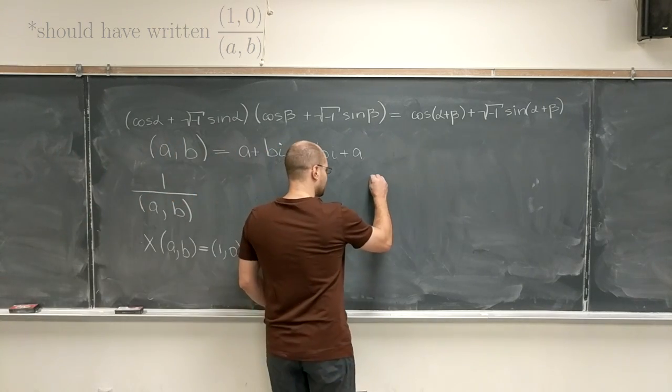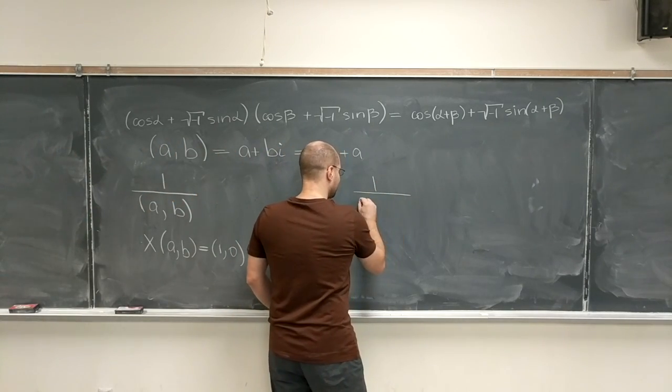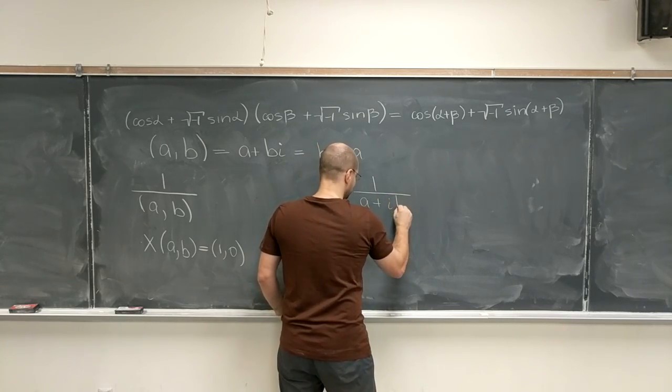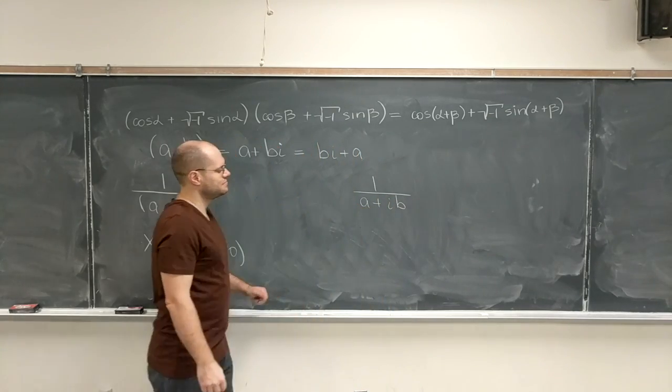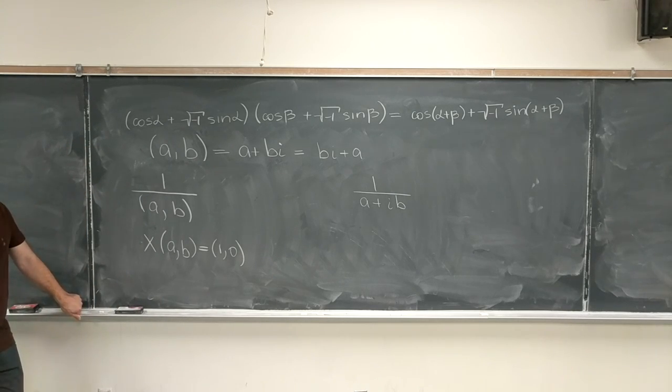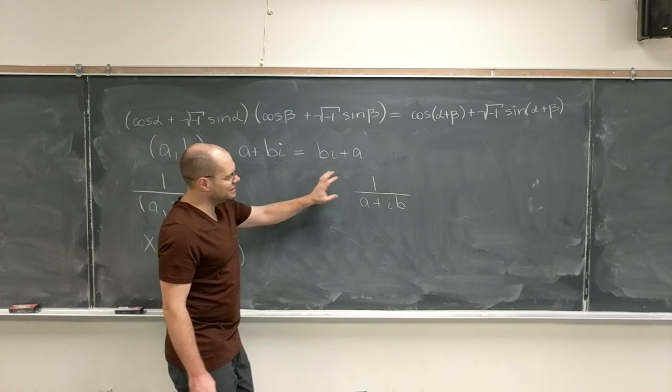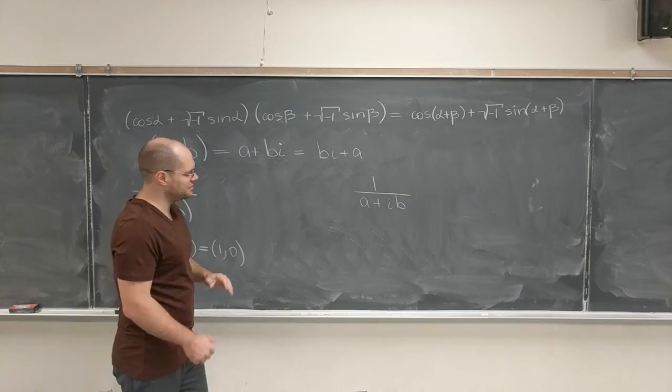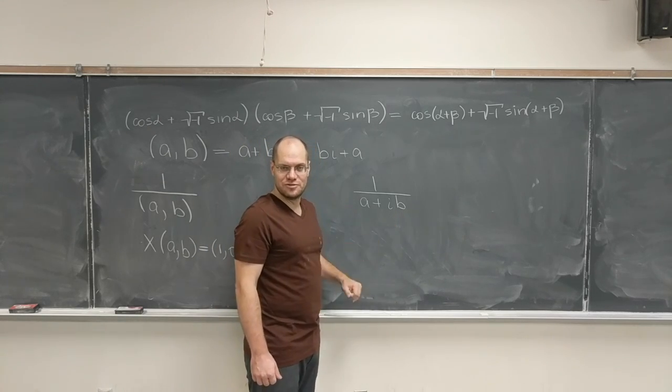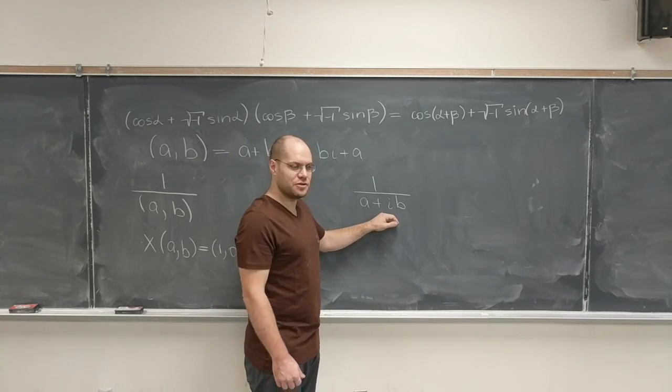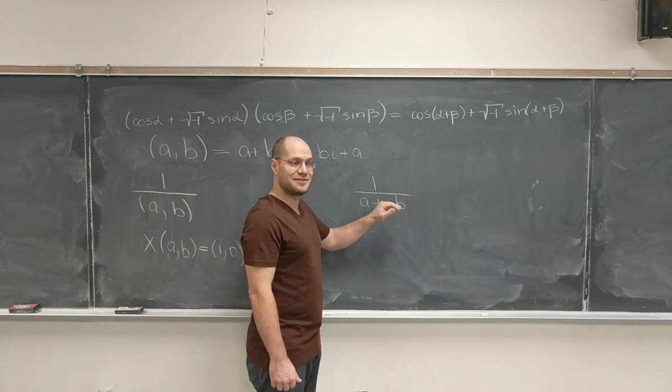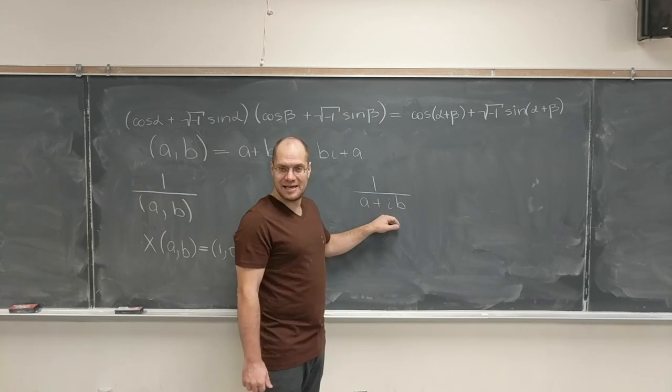In Euler's notation, it's 1 divided by a plus ib, or bi, doesn't matter. Okay, and I just think that when you look at this, all of you given a little bit of experience, or great experience that you have with complex numbers, you know exactly what to do. You're going to multiply both the numerator and the denominator by a minus ib.